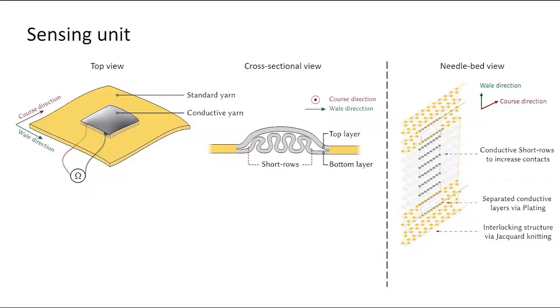Our sensors build on double-layered knitting structure. We enable the sensing capability by inserting conductive yarns at specific locations on both the top and bottom layers separately. We leverage the car knitting to form the interlocked double-layered base structure,